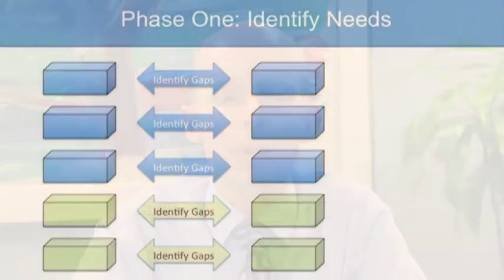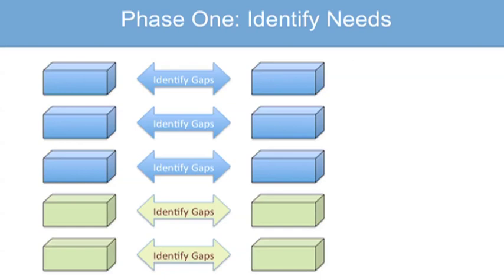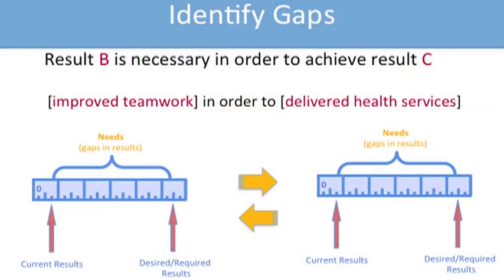In phase one, we can start to see a needs assessment framework taking shape, where we have these gaps in results across our results chain or results framework. We could have three levels of gaps in results. And then there are also gaps in the activities and the resources that support those accomplishments and results. To give an example, as we identify gaps in results, we could be looking to see whether or not result B is being accomplished, knowing that it must be necessary in order to achieve another result — result C.